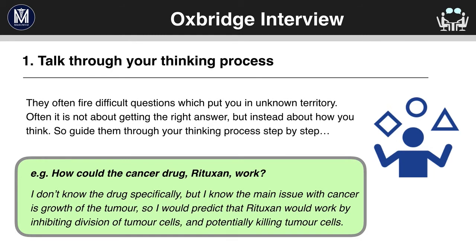First of all, talk through your thinking process. In the Oxbridge interview they'll often put you in very uncomfortable situations, give you difficult scenarios and make you think outside the box. The aim is not to unsettle you but instead is to see how you think. Often they have no expectation for you to get the right answer; instead they want to see your thinking process. So explain your reasoning and think out loud.